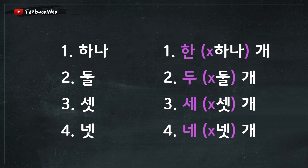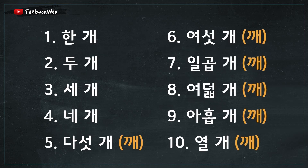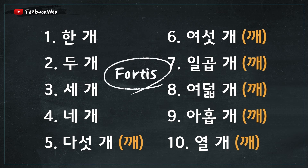You probably also noticed that the counter sounded different when I read it for numbers 5 to 10. I read it as 깨 instead of 개, compared to numbers 1 through 4. That's because those numbers have a final consonant in the Korean syllable — the 받침 — and those consonants are considered fortis consonants. Fortis means strong; it refers to pronunciations with relatively greater energy, so it makes the counter sound stronger.